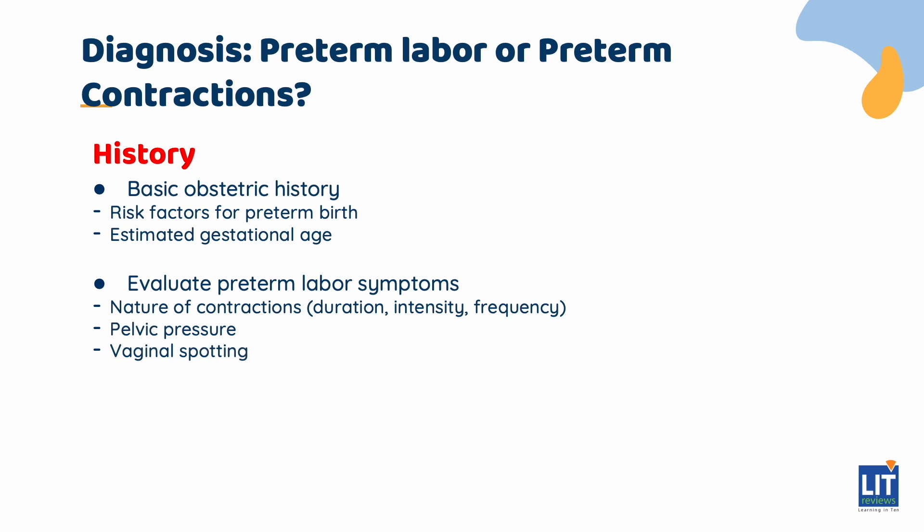Remember, labour contractions become increasingly painful over time and occur with a rhythmic regularity at least every 5 minutes, if not more frequently. Also ask about any spotting of blood or bloody mucus on her undergarments, otherwise known as bloody show, which is related to cervical softening and effacement.